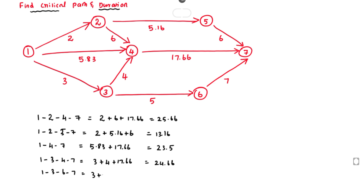The path containing the maximum duration is called the critical duration, and that path is called the critical path. The maximum duration is 25.66. The path containing this maximum duration is 1→2→4→7.